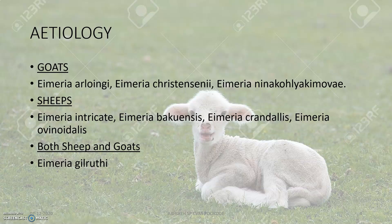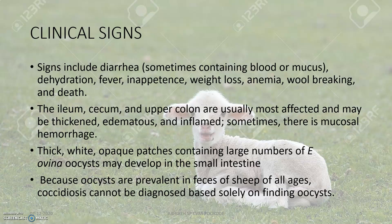In goats, the main species are Eimeria arloingi, Eimeria christenseni, Eimeria ninakohlyakimovae. In sheep, the main species include Eimeria intricata, Eimeria bakuensis, Eimeria crandalis, Eimeria ovinoidalis, etc. In both sheep and goats, Eimeria gilruthi will be present.